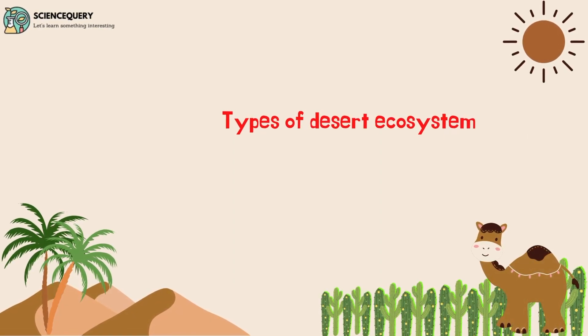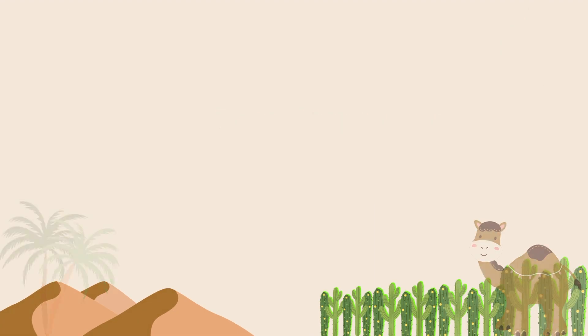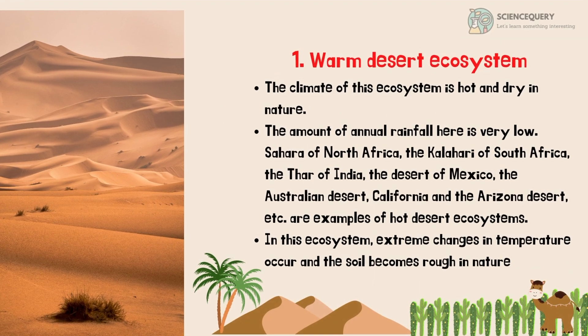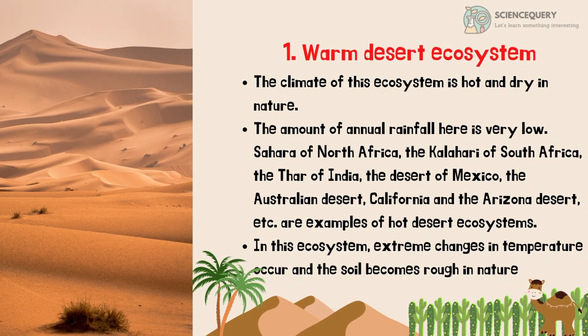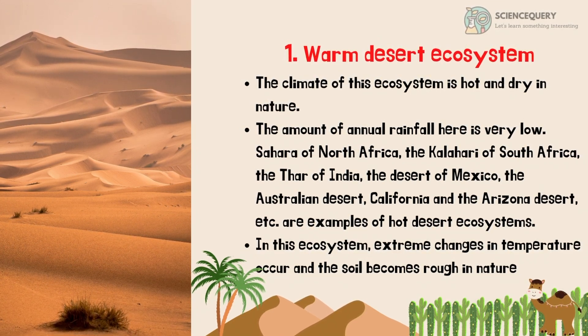Now let's see what are the types of desert ecosystem. The first one is the warm desert ecosystem. The climate of this ecosystem is hot and dry in nature. The amount of annual rainfall here is very low. Sahara of North Africa, Kalahari of South Africa, the Thar of India, the desert of Mexico, the Australian desert, California, and the Arizona desert are examples of hot desert ecosystems.